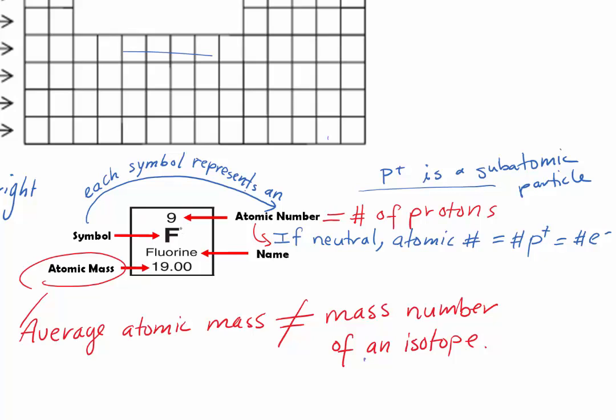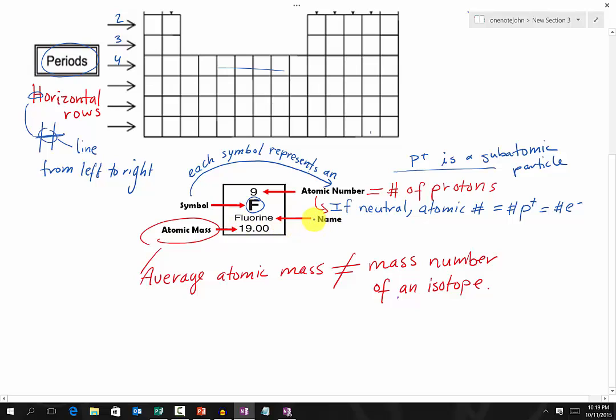Then we have the symbol for an element. An atomic number is unique to a specific element, so therefore it is unique to an element symbol as well. Then we have the name of an element. Again, if we have a name of an element, we will know the symbol of an element, and we also know the atomic number of an element, and also we know about the number of protons of an element.